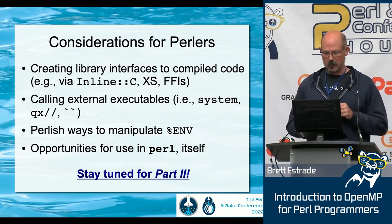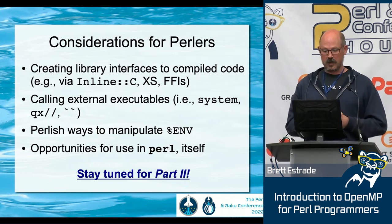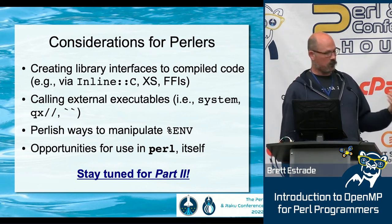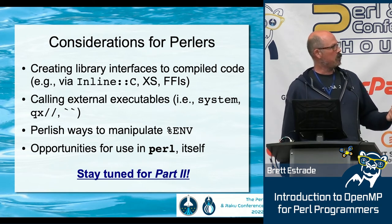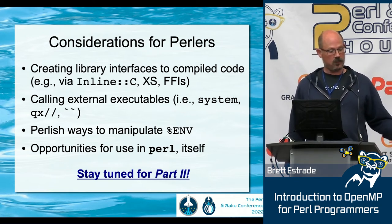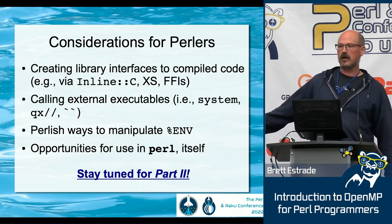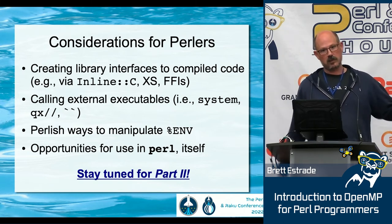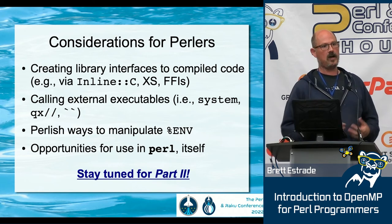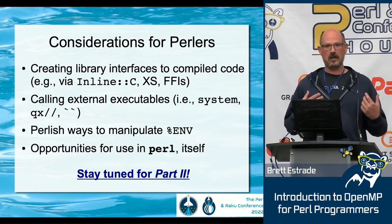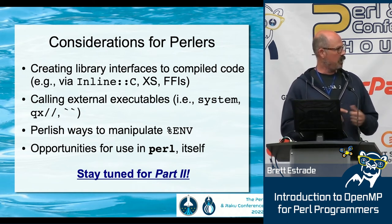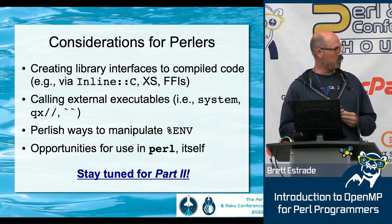Considerations for Perl programmers: you can create library interfaces and basically anything that's currently an option for integrating C, Fortran, or C++ code. You can compile your shared object or executable that you then interface with in your Perl program using whatever method. As long as you get a shared object or binary that has been created by a compiler that has been parallelized, it'll do the right thing. Tomorrow we'll talk about Perlish ways to manage the environment, and more opportunities for Perl itself.